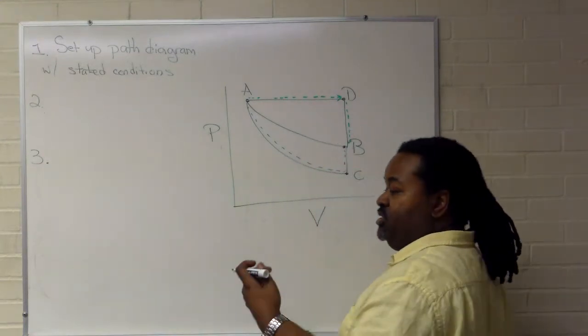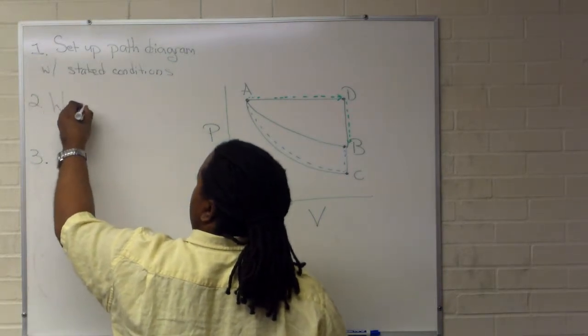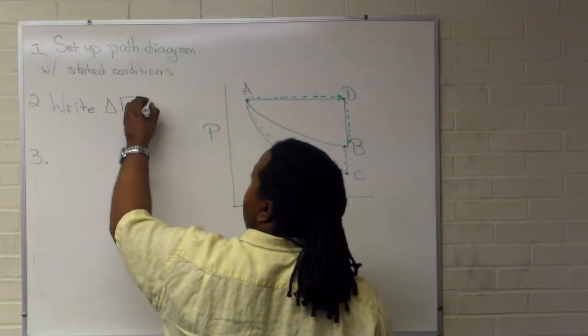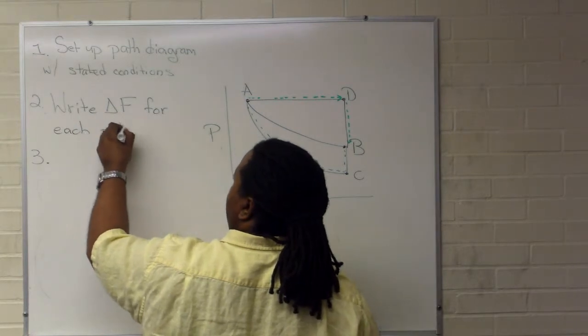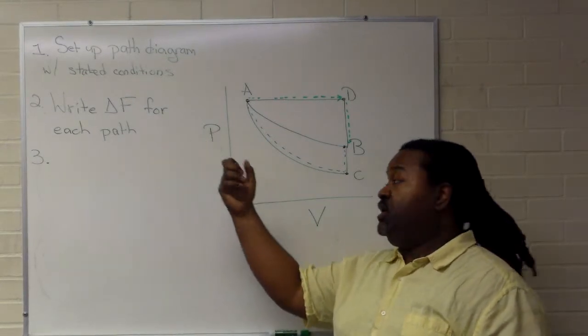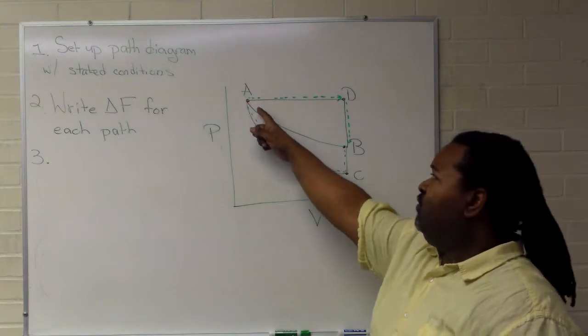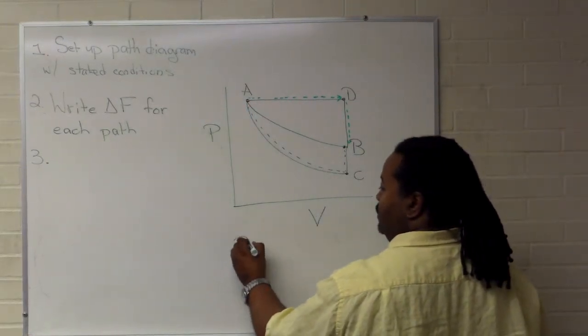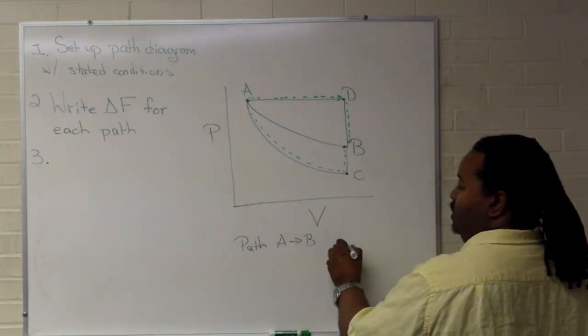Which is to write the change in the function for each path. Now based on the stated conditions in part one, what you will expect to see is a well-defined, fairly understood result for A to B. So we know what that is.